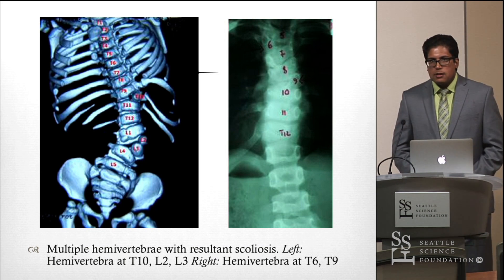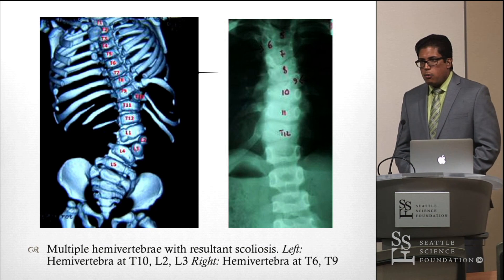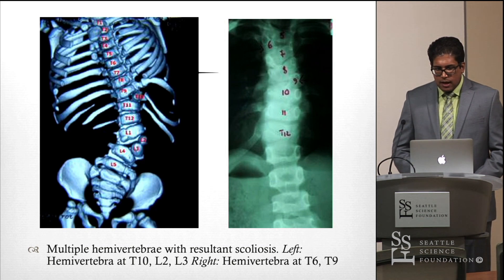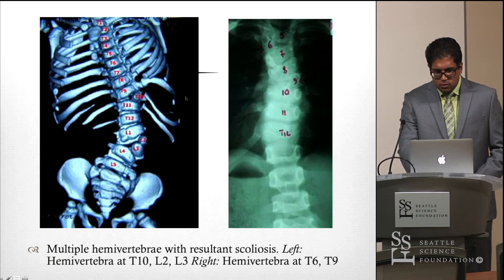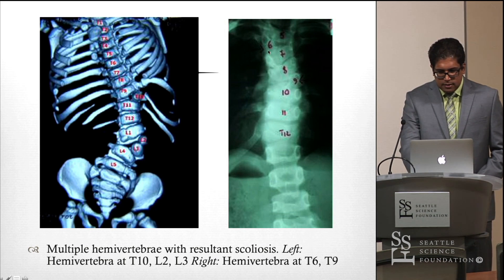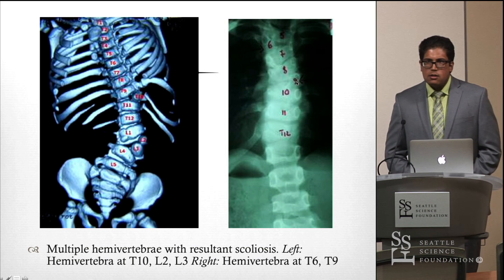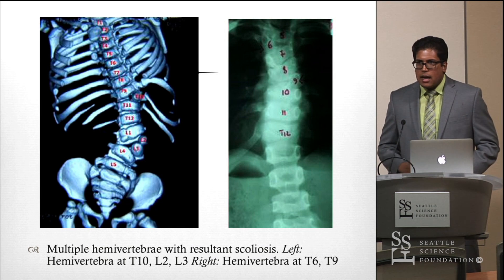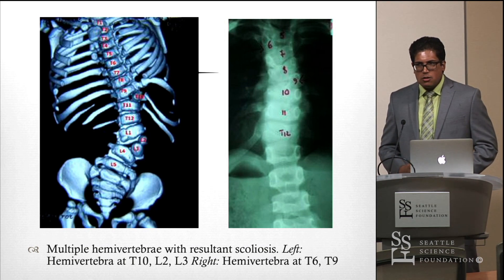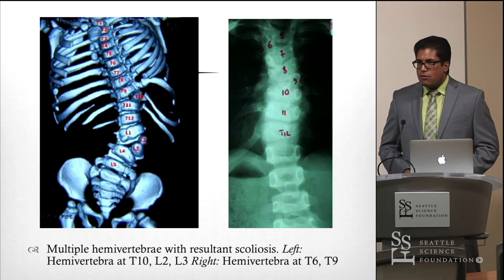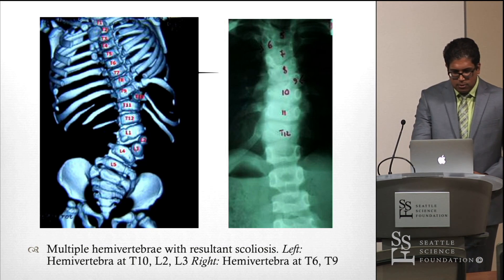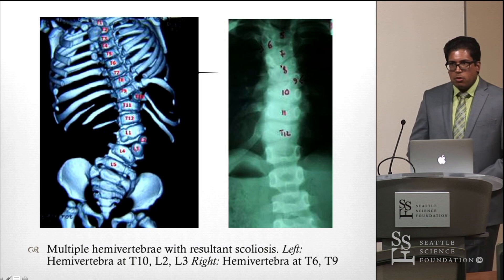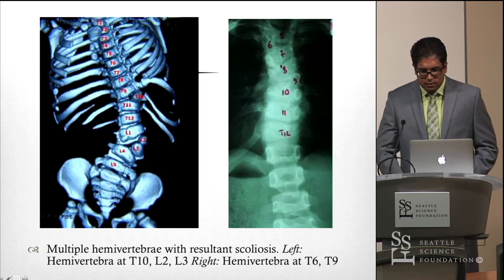The more hemivertebrae that are present, the greater the degree of clinical damage and the more important surgical intervention becomes to correct the curvature. You can also have hemivertebrae on opposite sides of the vertebral column — this individual has a right-sided hemivertebra at T6 and a left-sided one at T9. Some have posited that when hemivertebrae are located on opposite sides, they actually balance each other out, cancelling their effects, and may not have as significant an impact on spinal curvature.